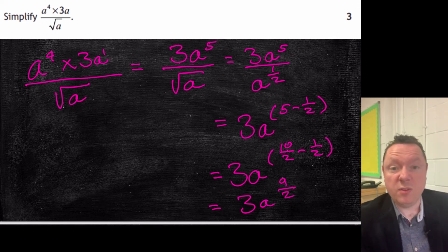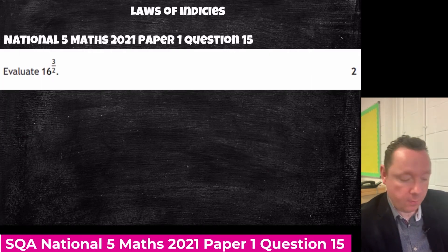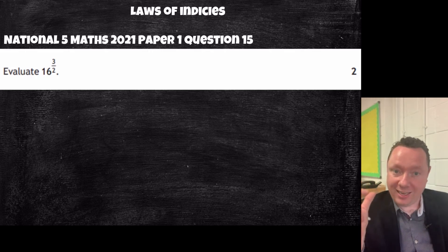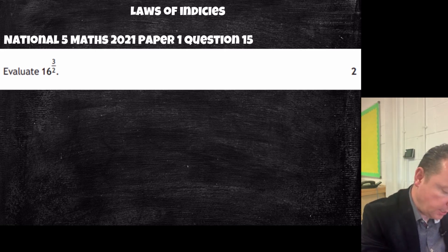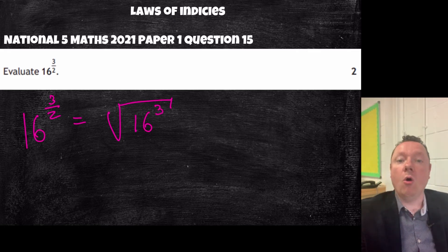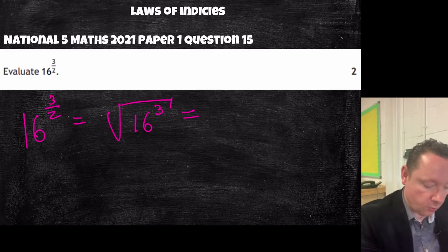You can leave your answer as 3a to the nine halves since it just says simplify, not put it back in root form. But if you were to write it as a root, it would be 3 times the square root of a to the power of 9. SQA National 5 Maths 2021, paper 1, question 15: evaluate 16 to the power of three halves. The denominator tells you it's the square root of 16, and the numerator tells you you're going to cube the result. The square root of 16 is 4, so that gives 4 cubed. 4 times 4 is 16, times 4 is 64.